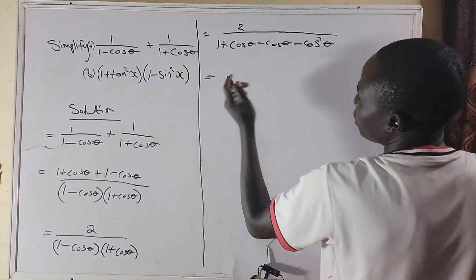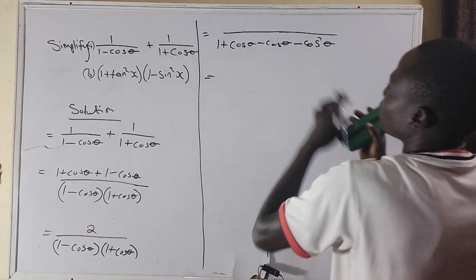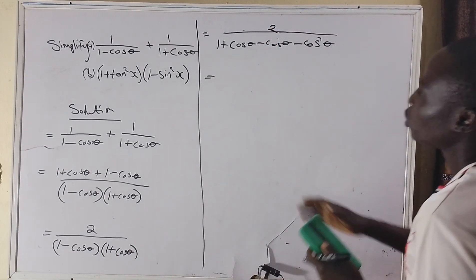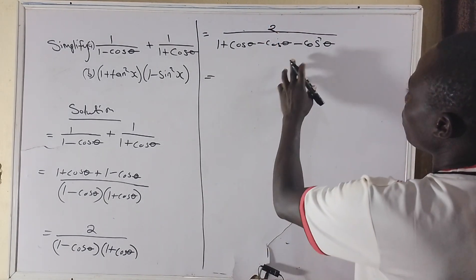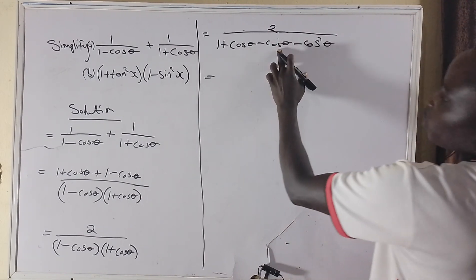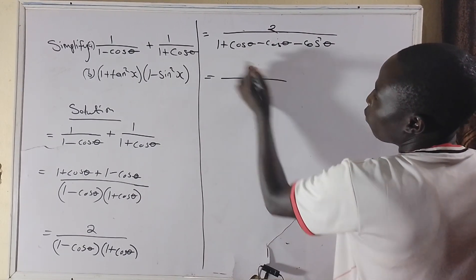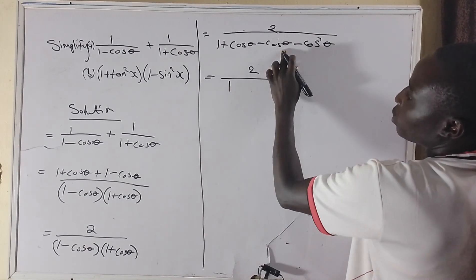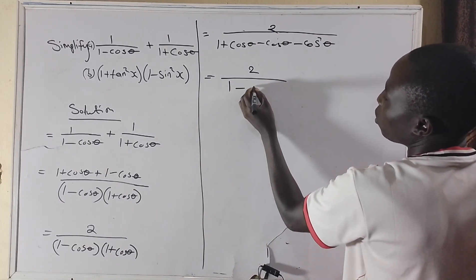So, cos theta minus cos theta is 0, and I have 2 over 1 minus cos squared theta.